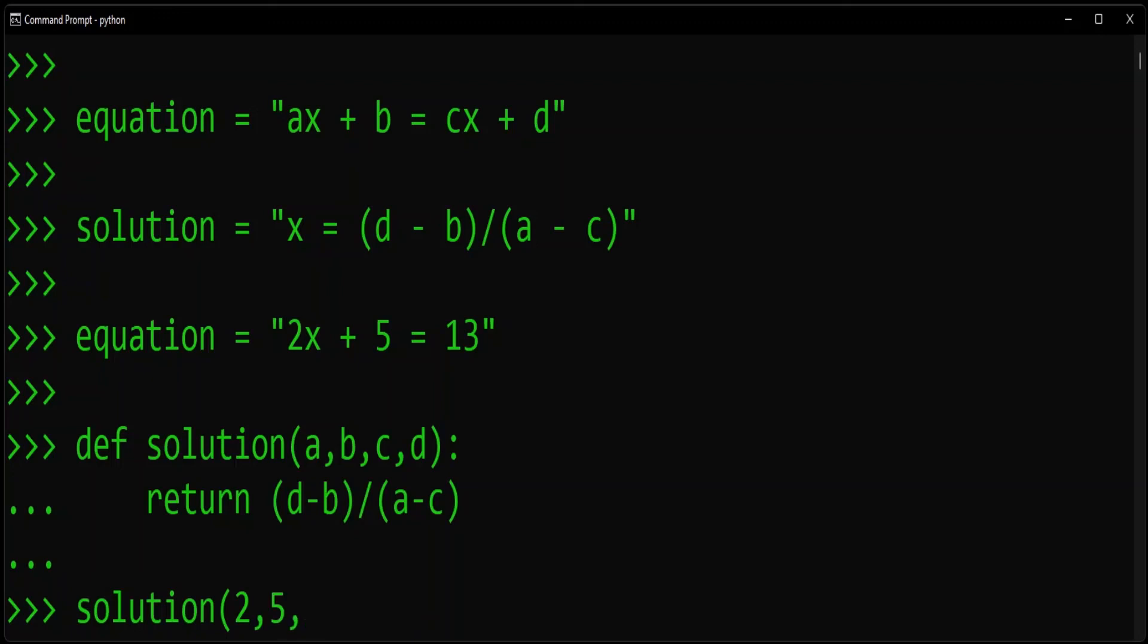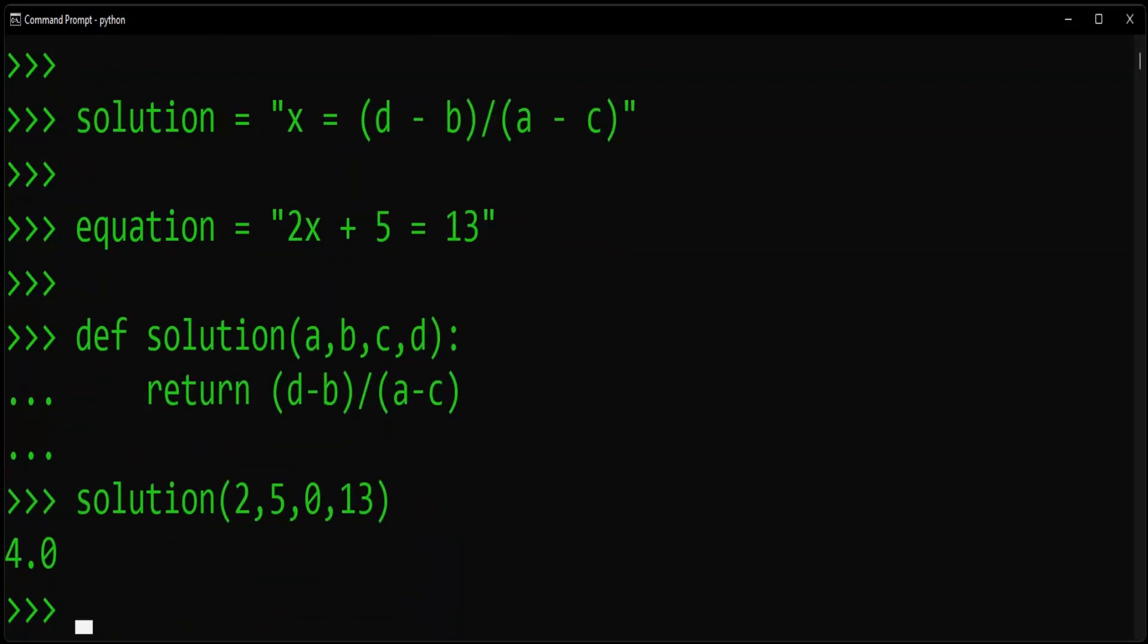2, 5, 0, and 13. And that's 2x plus 5 is equal to 13. And our solution comes out to 4.0, just like we had before.